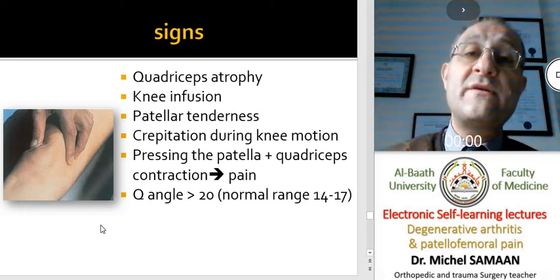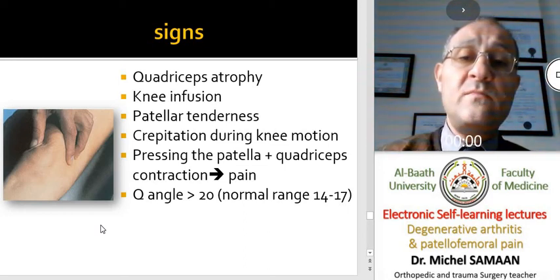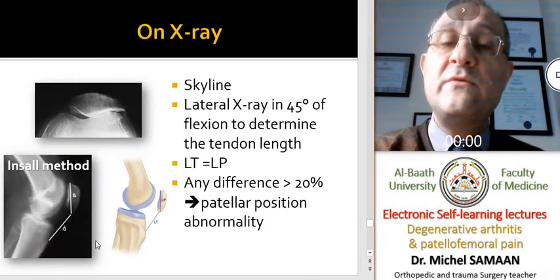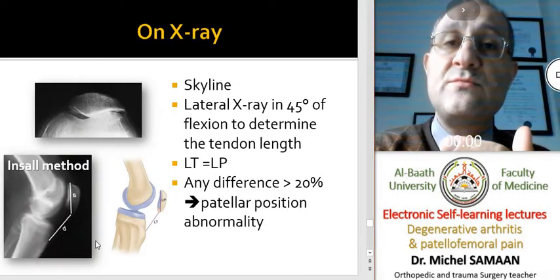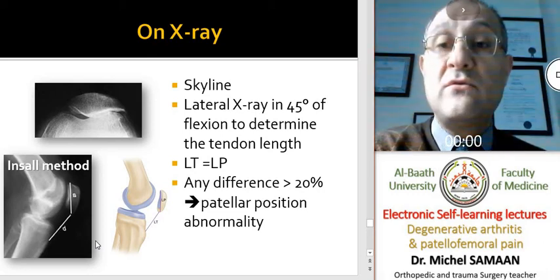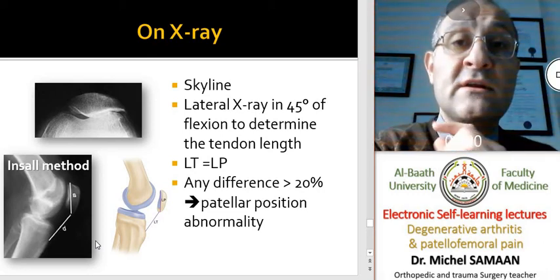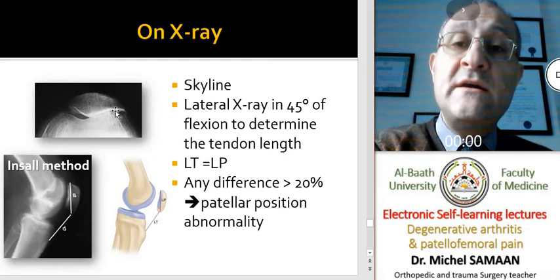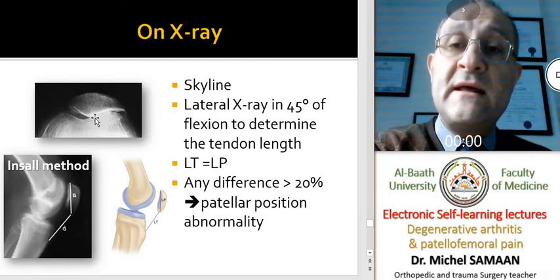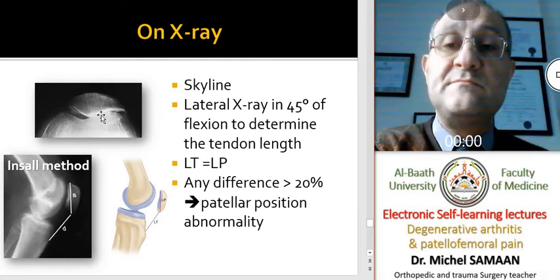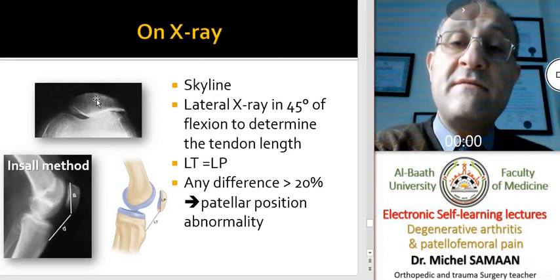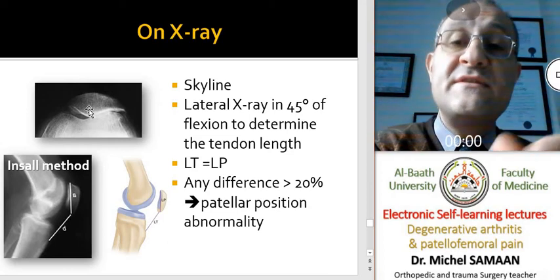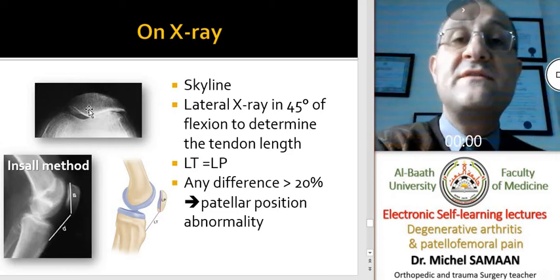When we measure the Q-angle, it is usually more than 20 degrees, especially in young females. For X-ray evaluation, we do anteroposterior and lateral views for routine knee assessment. For patellofemoral joint evaluation, we should perform the skyline view, where we can see the position of the patella in the intercondylar sulcus. Any lateral deviation will be obvious, especially at the first degrees of flexion — at 30 and 45 degrees of flexion.